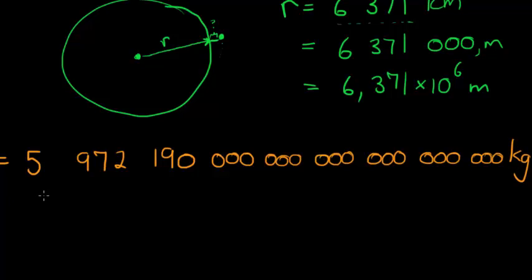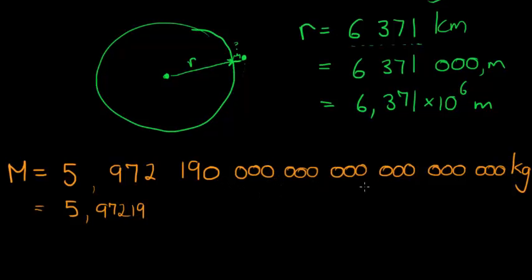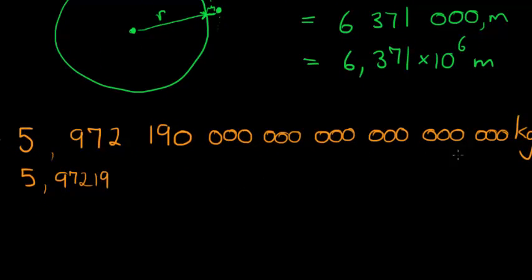So rather we use the scientific notation, which is simply 5.97219, and that means the comma moved 3, 6, 9, 12, 15, 18, 21, 24 spaces. So times 10 to the power of 24 kilograms. That's the mass of the Earth.